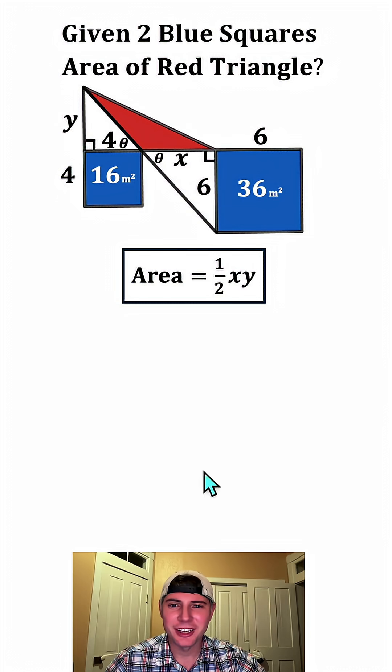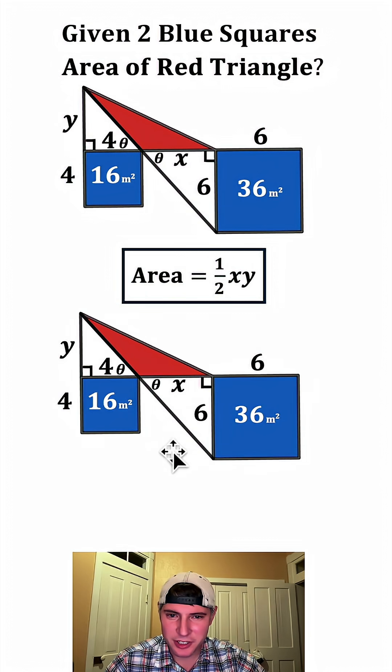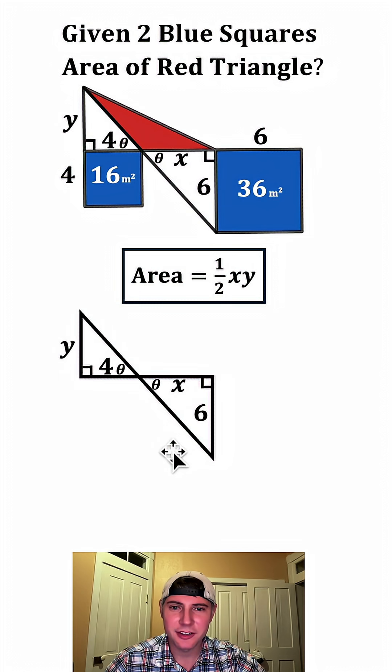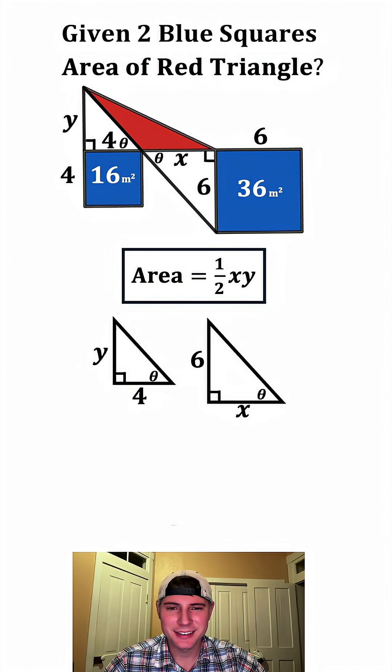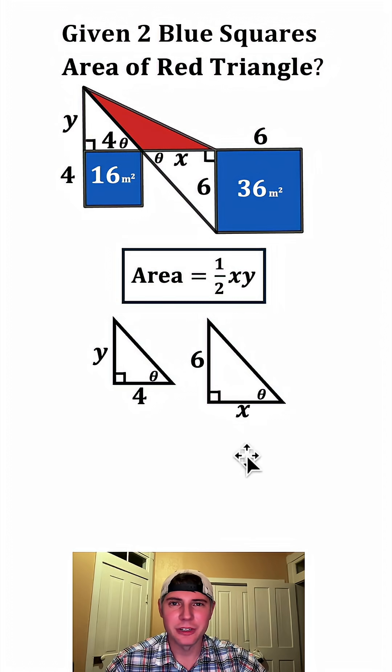So let's take this whole thing and copy it down here. I want to focus on these white triangles. Let's line them up like this. These are similar right triangles. We know that because they have two pairs of congruent angles. So that means we can set up a proportion.